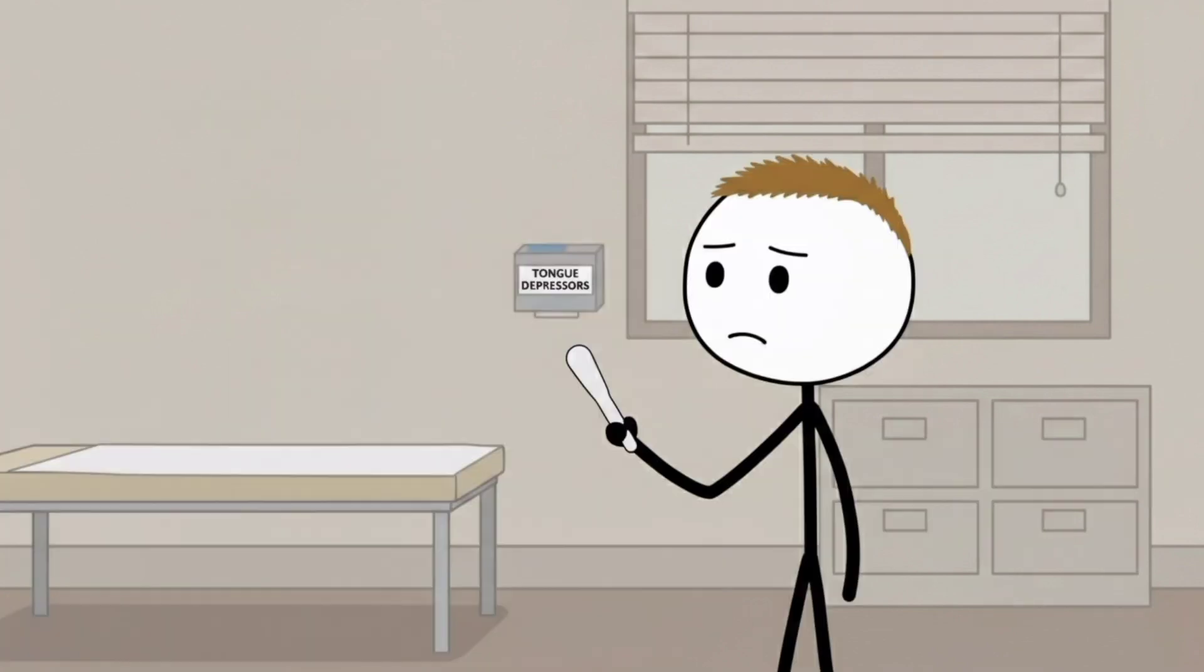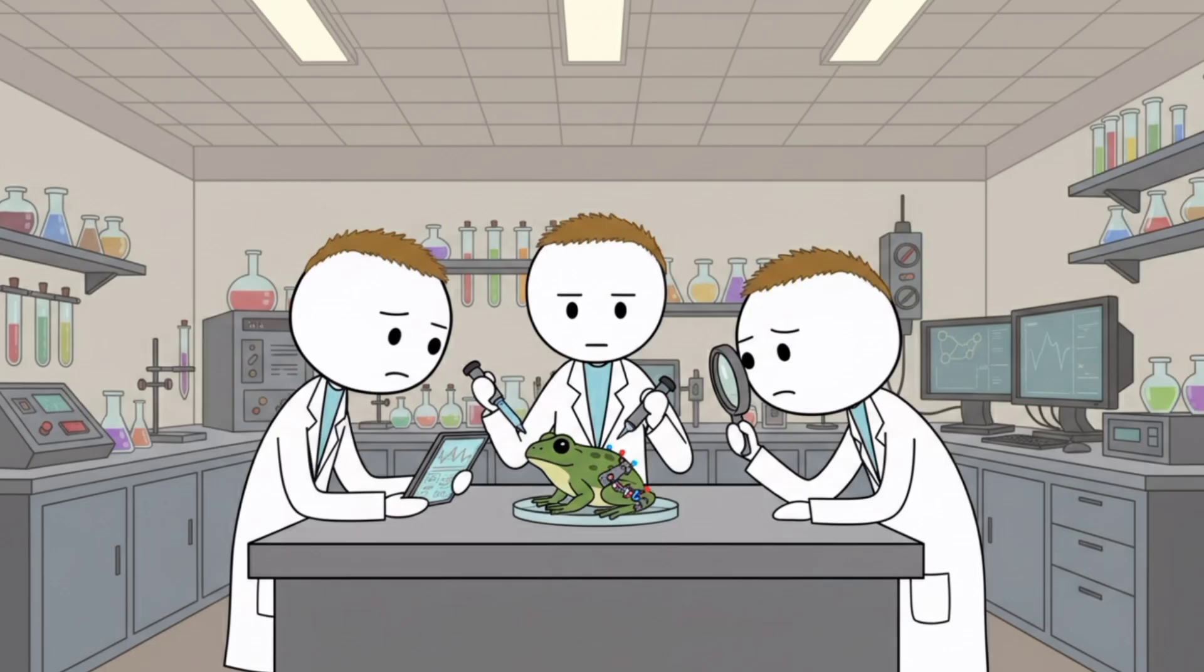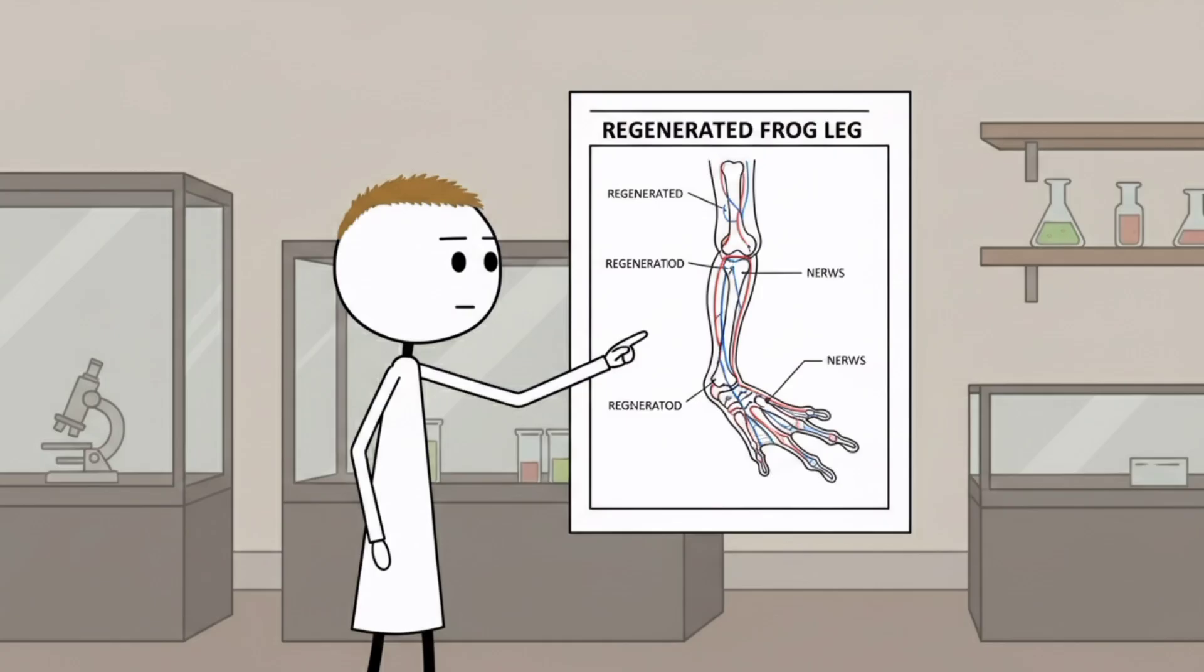Fingerprint and all. Not a scar-covered stump. An actual functional finger. In 2023, scientists went even further and re-grew a frog's entire leg using a cocktail of five drugs and a wearable bioreactor. The leg grew back in 18 months with bones, blood vessels, and nerves.